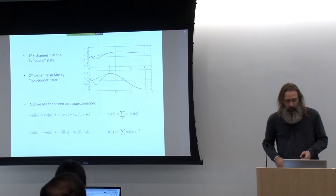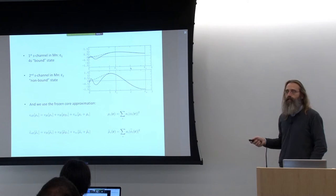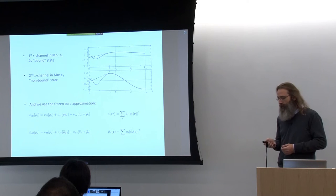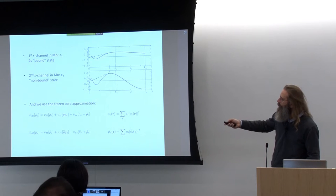What do these functions look like? In the PAW method, for each valence channel we include two functions in the standard potentials — one at the bound state energy of the atomic valence and one at a non-bound state. This means we have additional degrees of freedom in our local basis.